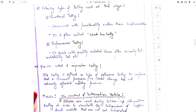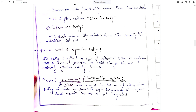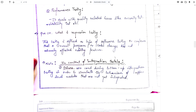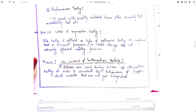Question number 10: What is regression testing? Regression testing is defined as a type of software testing to confirm that a recent program or code change has not adversely affected existing features. When we need to change or upgrade our code, regression testing ensures the code change does not affect the existing program.